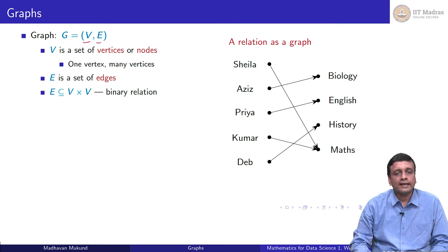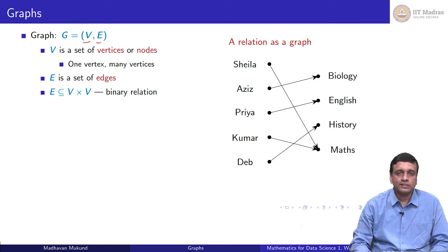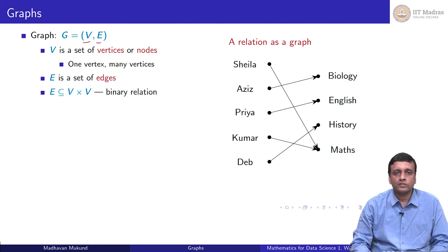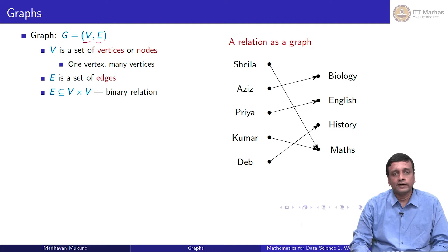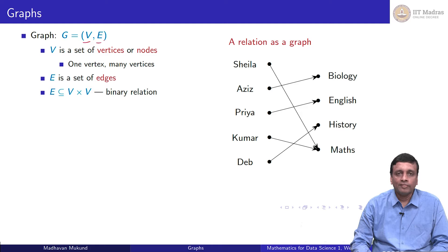Edges connect these vertices. Notice in the graph we drew before, we had two sets — the set of teachers and the set of courses — taking a relation which is a subset of T cross C. But once we put it into the graph, we do not really care about the distinction between T and C. T and C together form the set V of vertices of the corresponding graph. Now there are nine vertices, with no real separation between the five from the teacher set and the four from the course set. The edges were those that the original relation represented — namely those teachers which are teaching the courses.